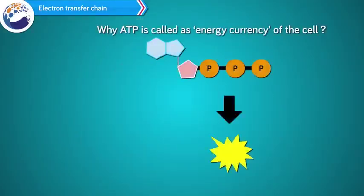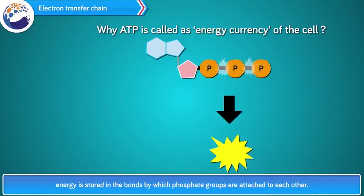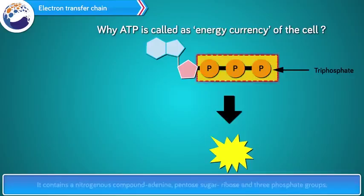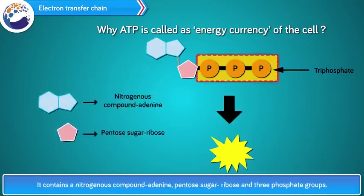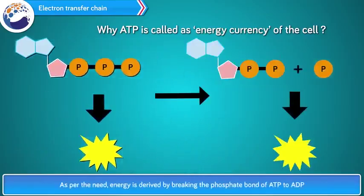Why is ATP called the energy currency of the cell? ATP is adenosine triphosphate, known as an energy-rich molecule. Energy is stored in the bonds by which phosphate groups are attached to each other. ATP is a triphosphate molecule formed from adenosine ribonucleoside. It contains a nitrogenous compound adenine, pentose sugar ribose, and three phosphate groups. As per need, energy is derived by breaking the phosphate bond of ATP to ADP.